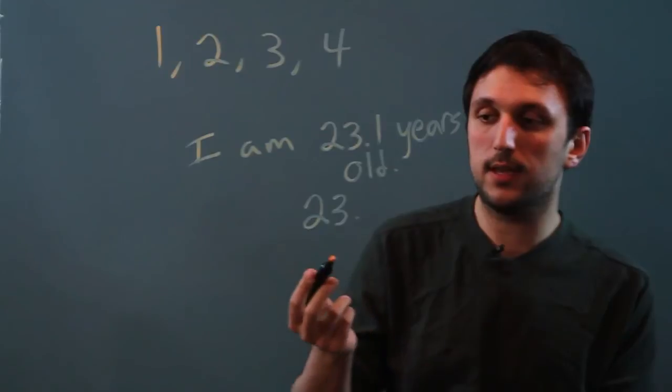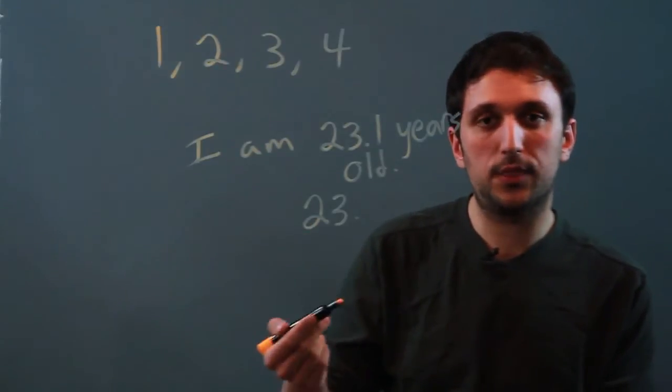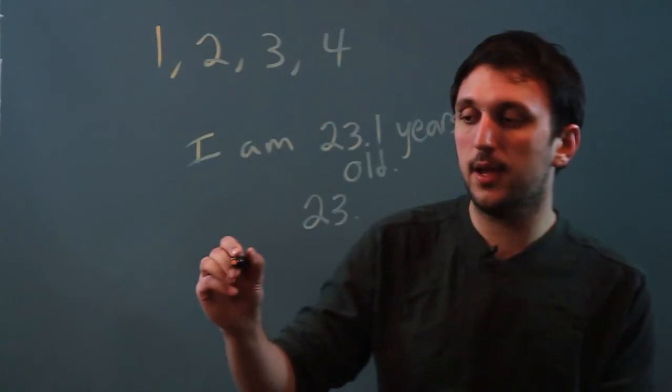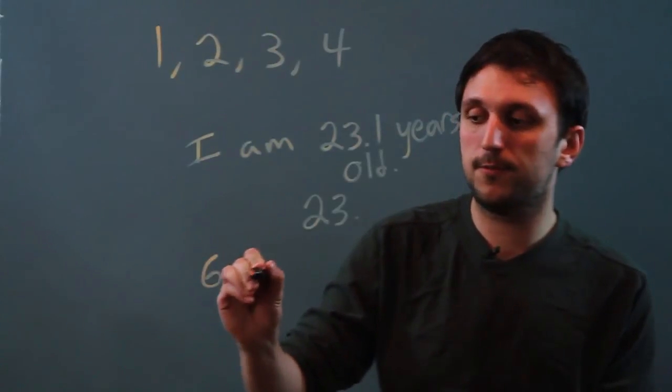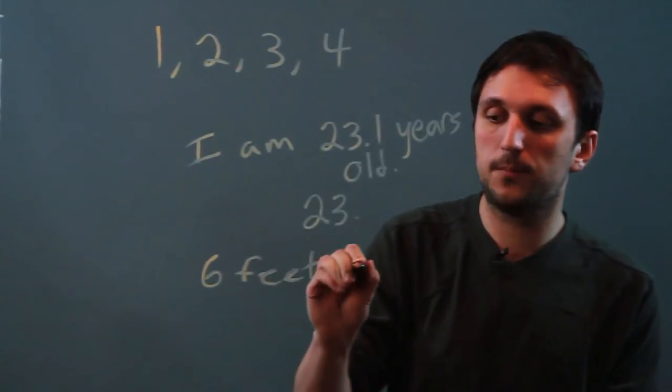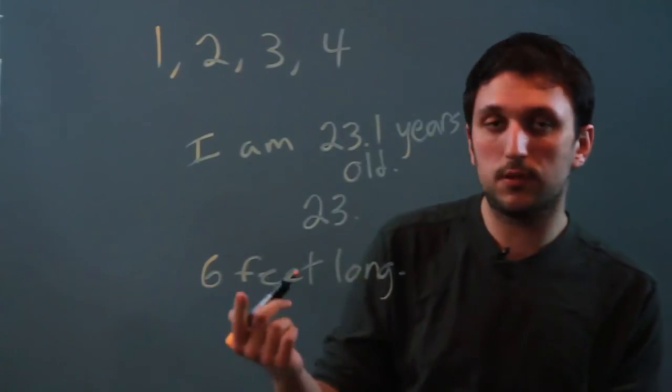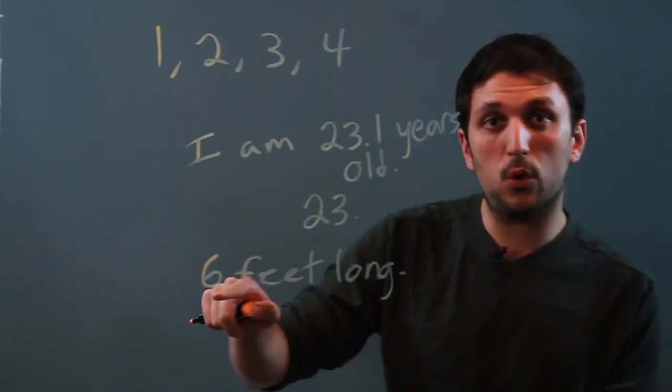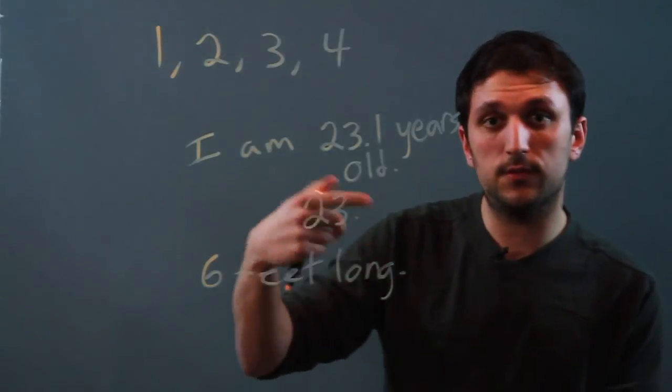Another way we standardize is with length and width and depth and weight. We want to buy something that is 6 feet long. Sometimes we'll get something that's 6.5, but we always think about it in terms of the whole numbers, 6 feet, 7 feet, 8 feet.